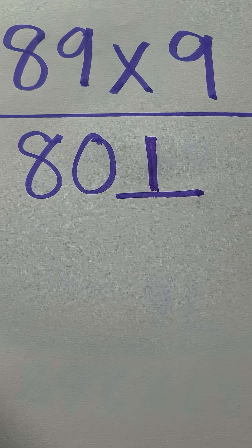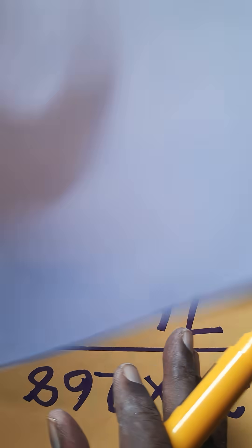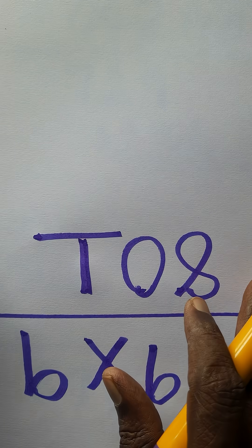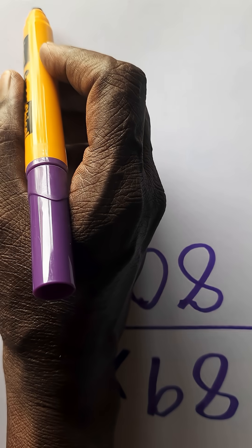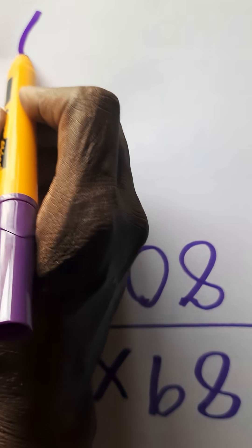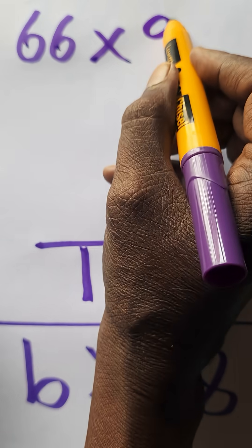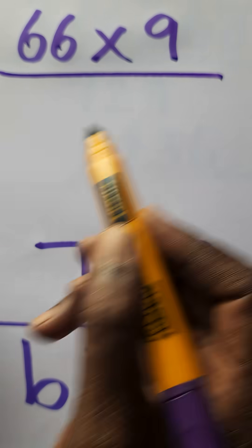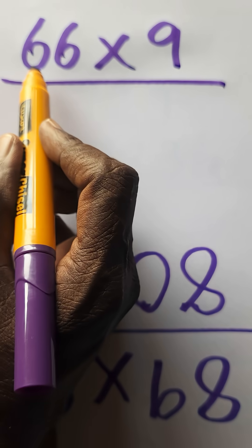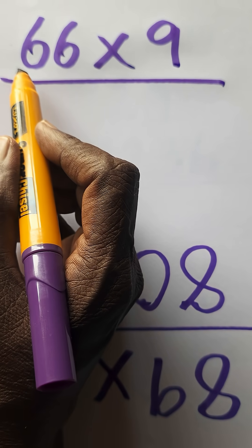Say any other 2-digit number without any multiple. Say any number. 66. 66 into 9, okay, 9th table. This is 6 plus 1 equals 7. Subtract 7 from...